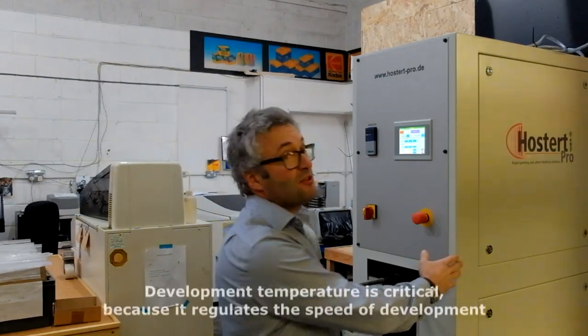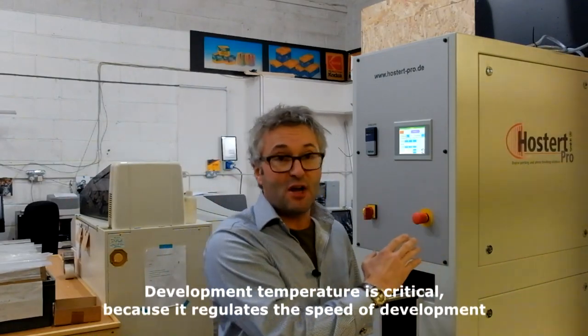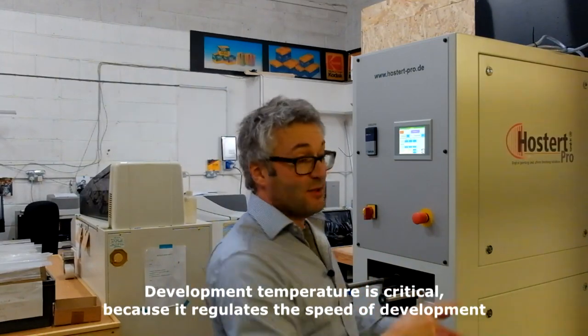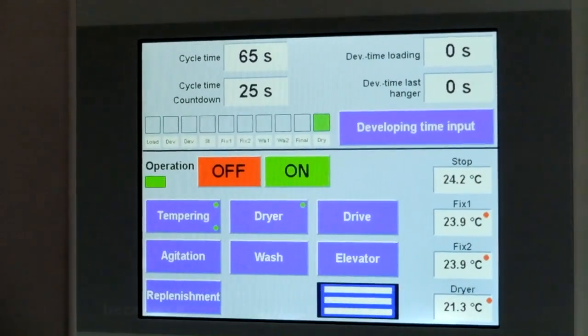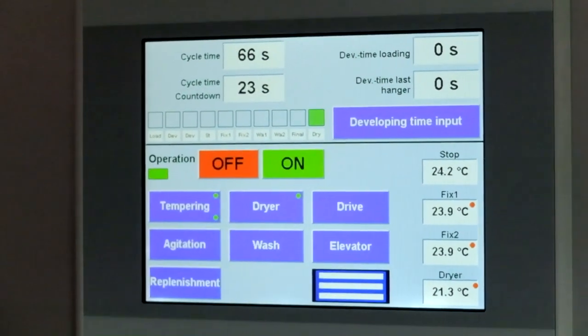How do we nail down development consistency? We work to very tight tolerances. This machine controls developer temperature and in fact it controls the developer, the stop, the fix, all to within 0.2 of a degree.